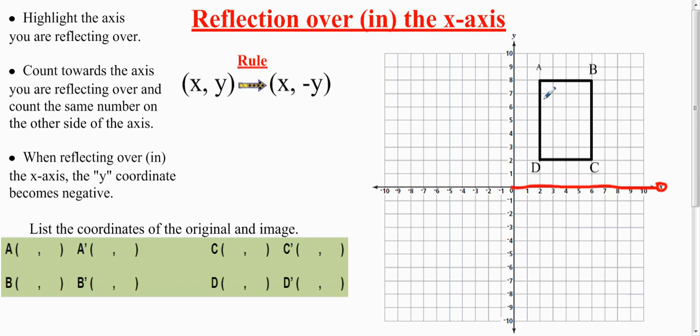What it is is basically just going over the x-axis. So the first thing I want to do is actually list the coordinates of the original and the image. Let's just do the original because that's all we know right now.